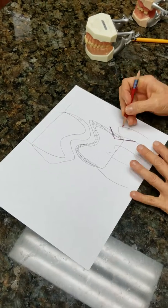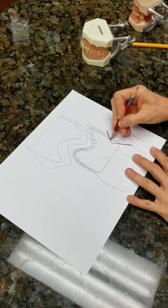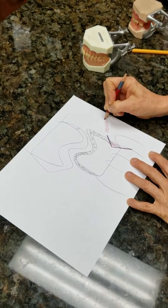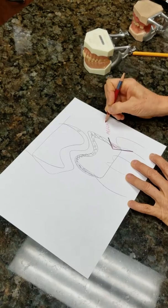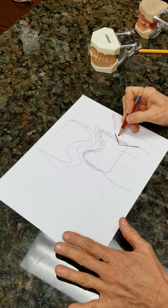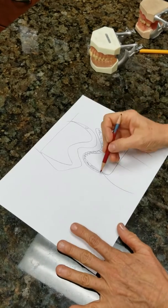This notch right here that you have is called an abfraction. It is the technical scientific term to explain this notching that occurs at the gum line.